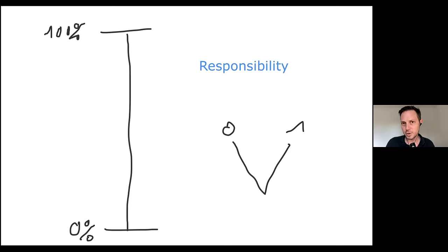In most situations, we have some responsibility over what happens to us. Let's call that X percent. I don't care if X is 5%, 50%, 99%. I don't really care. It's somewhere between zero and 100%. What matters is, on the one hand, what is my responsibility? And on the other hand, what is not my responsibility?